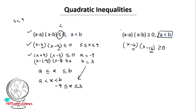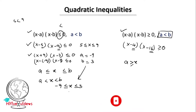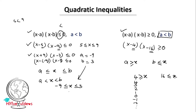Now we have a condition. Here x value is less than or equal to a, or x is greater than or equal to b. That means x is less than or equal to 4, so values are 4, 3, 2, 1, 0, minus 1, minus 2 and so on. At the same time, x is greater than or equal to 16, so values are 16, 17, 18, 19 and so on.